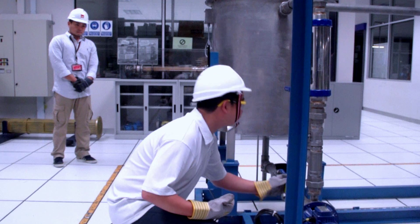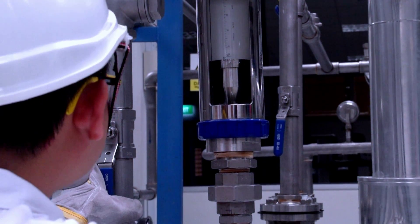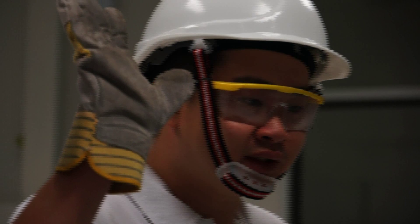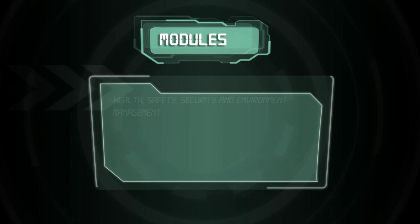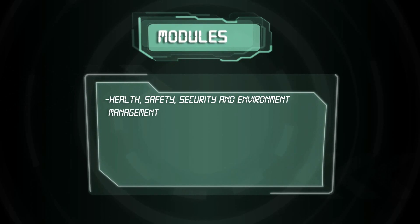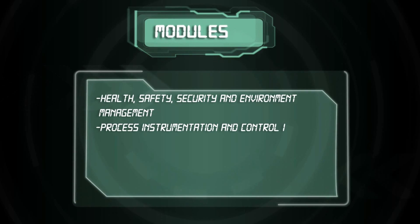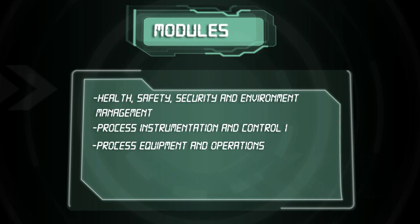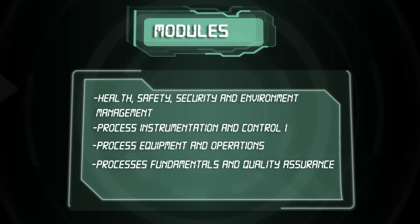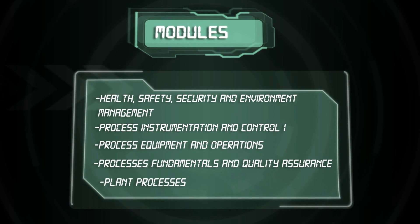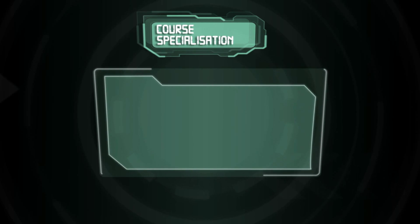The core structure consists of common basic modules and core specific modules relating to your chosen specialization. The common basic modules are Health, Safety, Security and Environment Management; Process Instrumentation and Control 1; Process Equipment and Operation; Process Fundamentals and Quality Assurance; and Plant Processes.